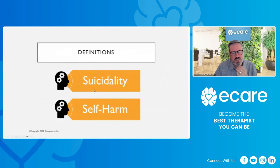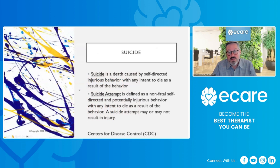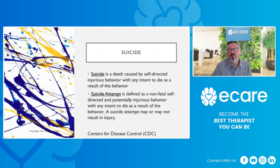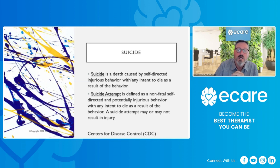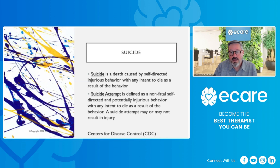Let's talk about definitions — what we're talking about with suicidality and self-harm. A suicide is considered by the Centers for Disease Control a death caused by self-directed injurious behavior with any intent to die as a result of that behavior. A suicide attempt is defined as a non-fatal, self-directed, and potentially injurious behavior with any intent to die as a result of the behavior. A suicide attempt may or may not result in injury. The key hallmark of both definitions is that there is intent to die as a result of the behavior.